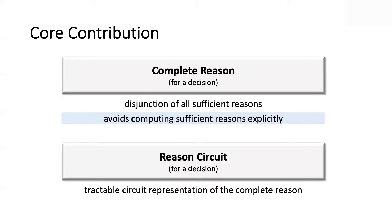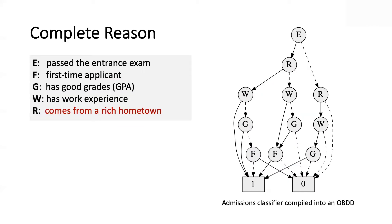The other fundamental notion from a practical point of view is the notion of a reason circuit, and this is a tractable circuit representation of the complete reason. So not only do I want to get a formula that represents the disjunction of all sufficient reasons, I want to represent that formula in a tractable way because I'm going to use it as a basis to do all kinds of things, as we will mention later. Now, let's go ahead and see a complete example that puts all of these things together.